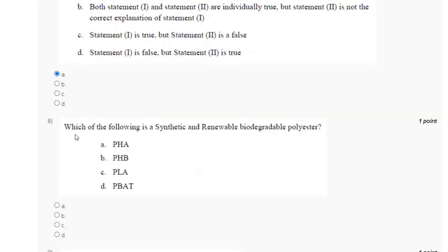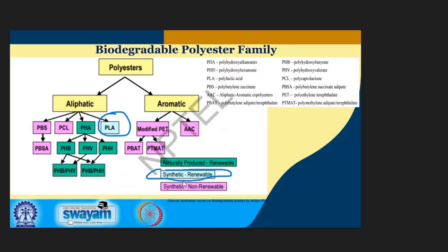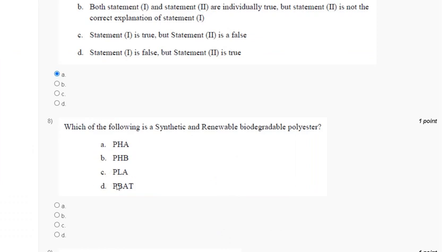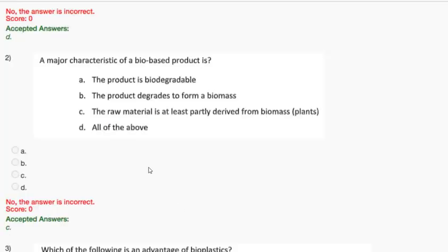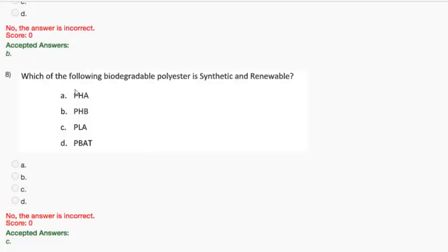Question 8: Which of the following is a synthetic and renewable biodegradable polyester? Explanation: PLA plastic is a synthetic and renewable biodegradable polyester. The correct answer to question 8 is option C — PLA plastic.